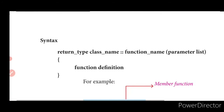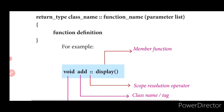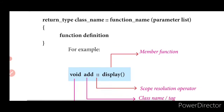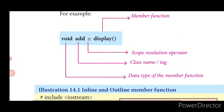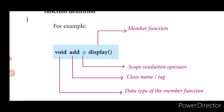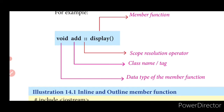To define a member function outside the class, the syntax is: return type, class name, scope resolution operator, function name, and parameter list, followed by the function definition. For example: 'void add::display()' — here 'void' is the return type, 'add' is the class name, '::' is the scope resolution operator, and 'display' is the member function. If you are not going to return anything, declare the return type as void.